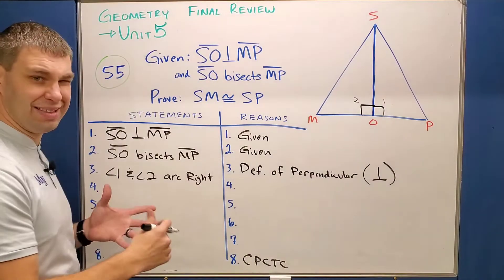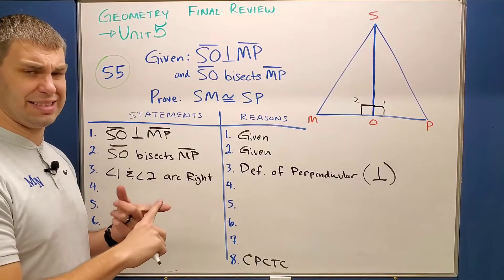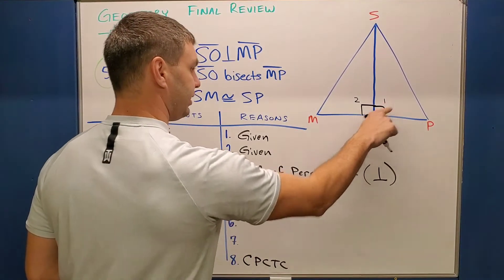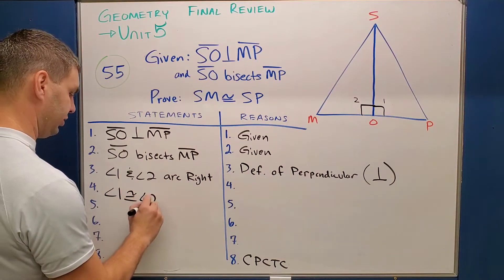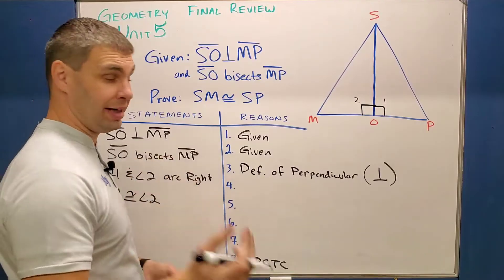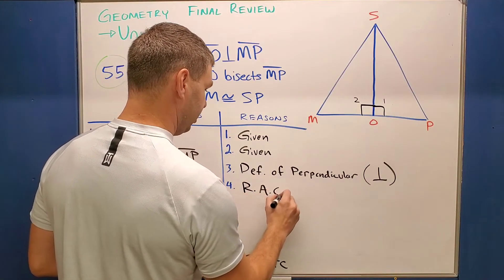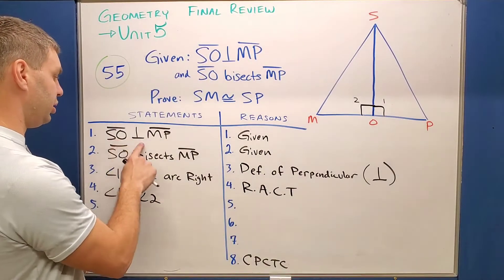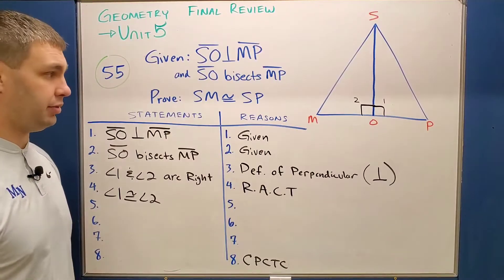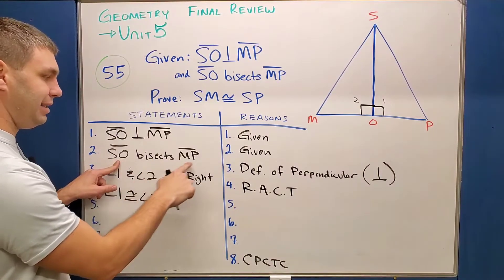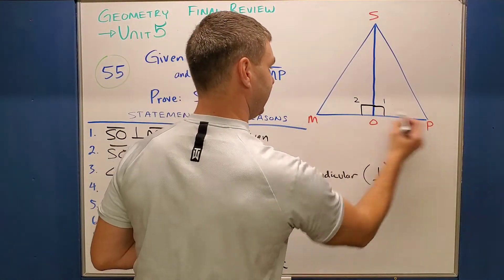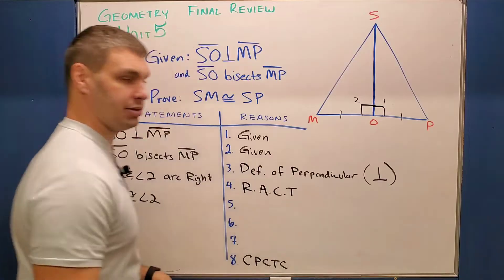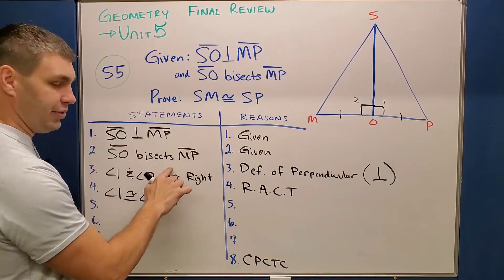Once I know they are right angles, I still have to say they're congruent to each other. Remember we need at least three things — like side-angle-side — to show these triangles are congruent. Since these are both right angles, I can say angle one is congruent to angle two. The reason is the right angle congruence theorem — RACT — where all right angles are congruent to each other. That's all from my first given saying SO is perpendicular to MP. My second given says SO bisects MP, which means MP is cut exactly in half — in other words, MO is congruent to OP. I write that into my proof and the reason is the definition of a segment bisector.